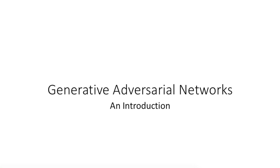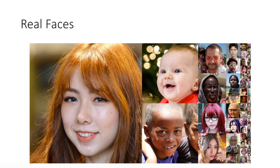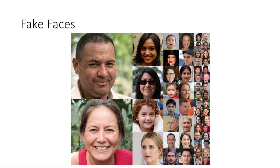Let's get started by explaining each of the terms in the title: generative, adversarial, and network. First, let's explain what we mean by a generative model. Quite simply, this means our model can generate new data samples that look like the training data. So if you're trying to learn images of faces, a generative model can create new, never-before-seen face images. These are examples of generated, totally fake face images — these are not real people. But the generative model has learned what faces should look like, and can therefore create new examples of them.